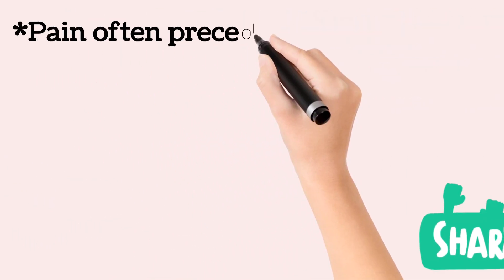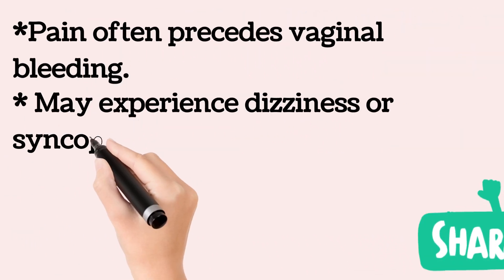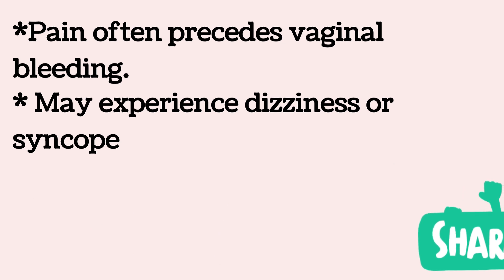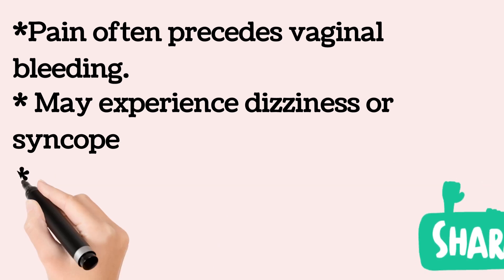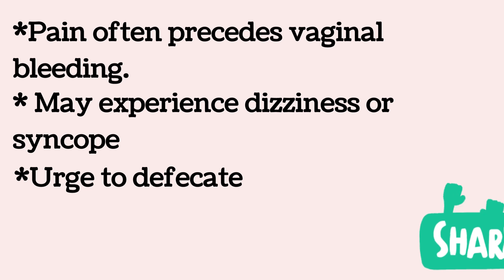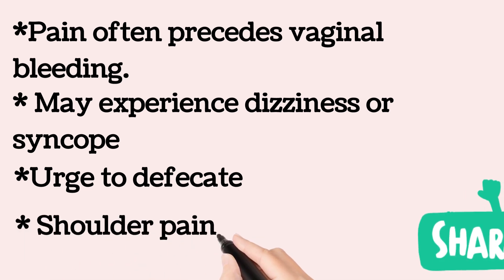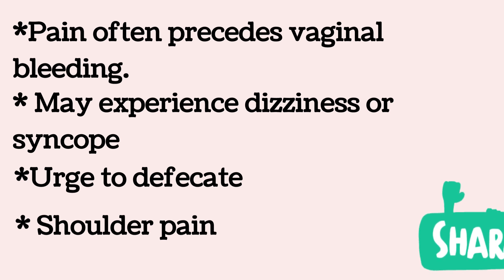Patients with hemorrhage, with or without tubal rupture, may experience dizziness or syncope, may have an urge to defecate due to the effect of blood in the pouch of Douglas, and may have shoulder pain from diaphragmatic irritation by intra-abdominal blood.